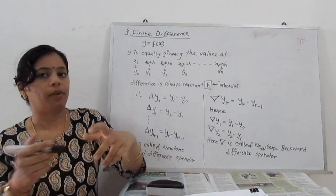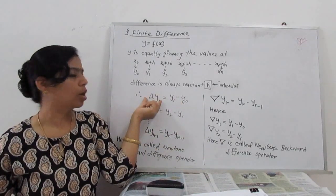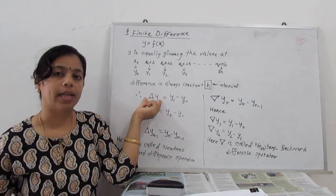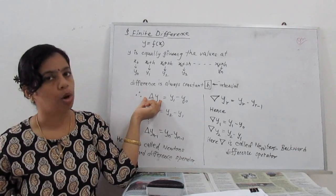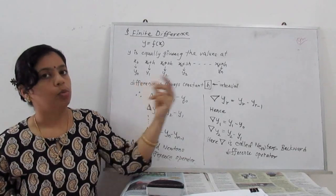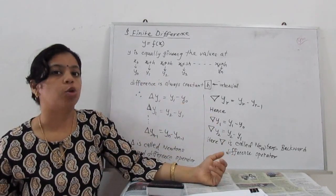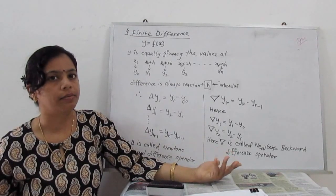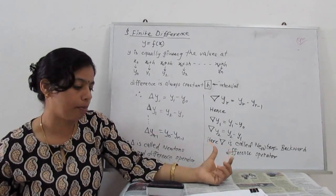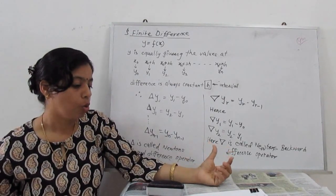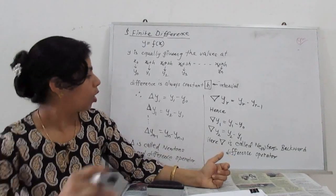Similarly, we can find not just the first-order operator but also second order, third order, fourth order, and so on. Order means how many times we apply the operator — just like differentiation. These are the difference operators, analogous to derivatives.